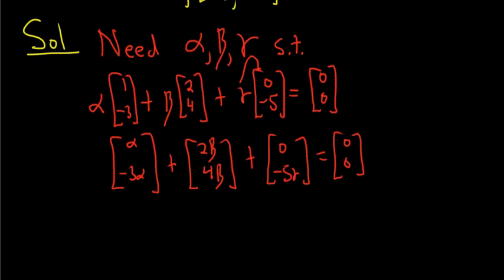Now we can combine these into one vector here. This is going to be alpha plus 2 beta, and that's the first entry. The next entry is minus 3 alpha plus 4 beta minus 5 gamma, and that's equal to the vector 0, 0.